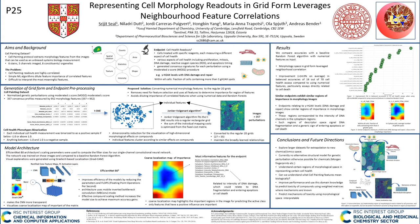I'm Sreejit and I'm excited to share my research on representing cell morphology readouts in grid form to leverage neighborhood feature correlations. The Cell Painting dataset is an unbiased systems biology measurement of various cell statistics across six different stains, five channels, and eight constituent organelles. The problem is that the numerical features are highly correlated and difficult to interpret biologically. Here, we predict cell health readouts where a specific reagent is used to measure various aspects of cell health including proliferation, mitosis, DNA damage, etc. We generate a t-SNE visualization of the features across each perturbation, where each point on this t-SNE map represents a feature, and this clustering represents features having similar effect across all perturbations.